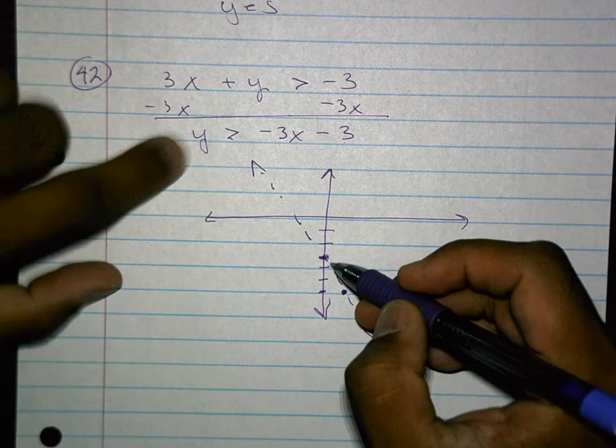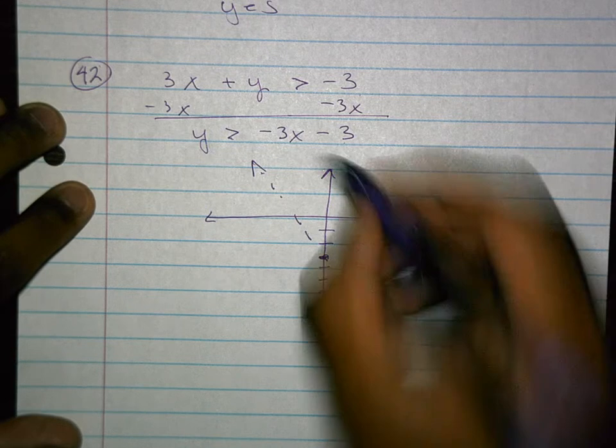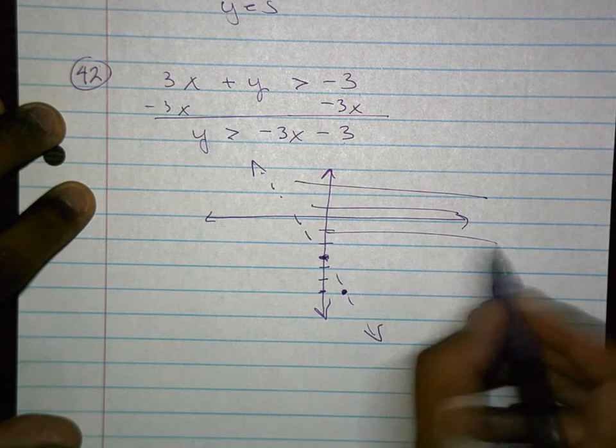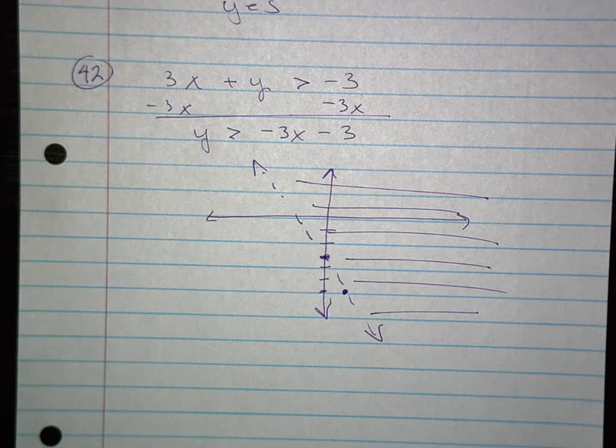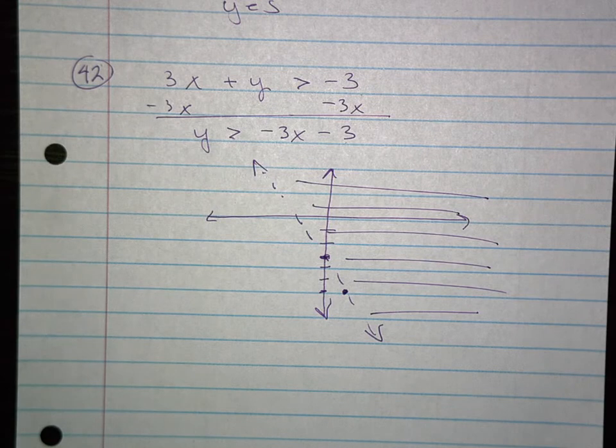It's a dashed line. Then I go to the y-intercept and say, are the y's bigger or smaller, and the y's are bigger, so I'm going to shade everything above here. You have to shade when it comes to graphing inequalities. There's no shading with equal signs, it's just inequalities.